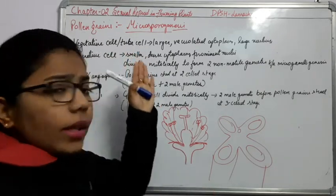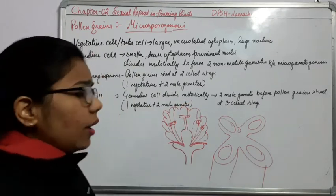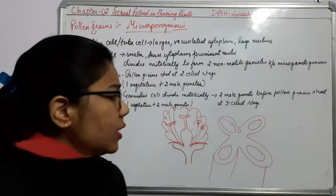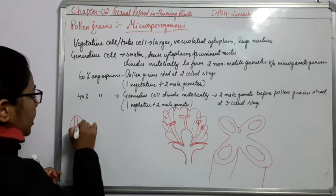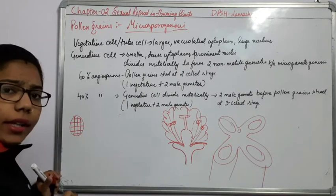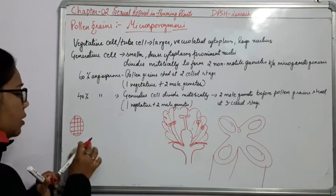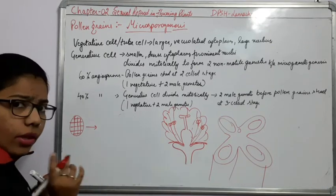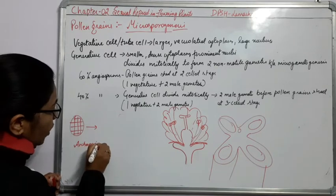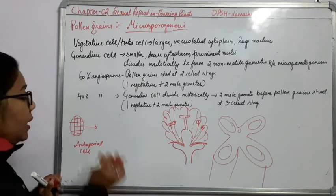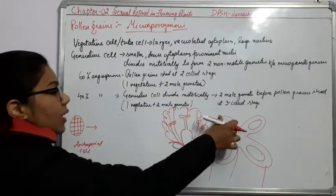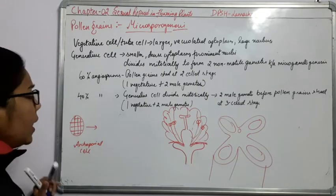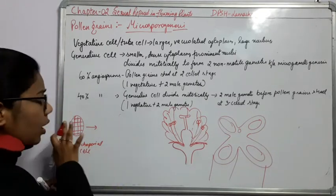Now we have to understand how it is forming. It will start from the archesporeal cell — from a mass of undifferentiated cells. Archesporeal cell means it is a primitive cell which is present in the anthers. There is a requirement that it should undergo division.